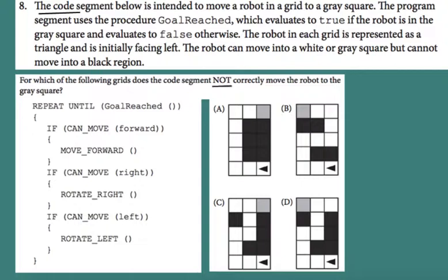Let's start with grid A. If it can move forward, it moves forward one step. Then it checks if it can turn right — it cannot. Then if it can turn left — it cannot. So it goes back to the top and moves forward again, coming to the next position.